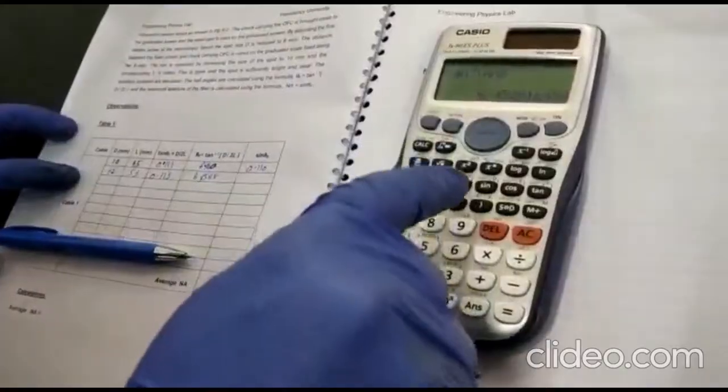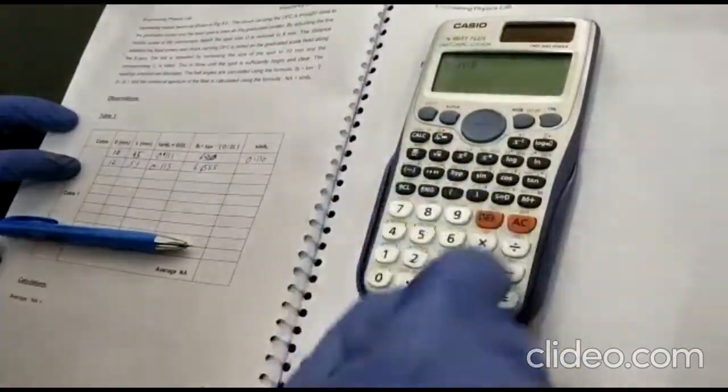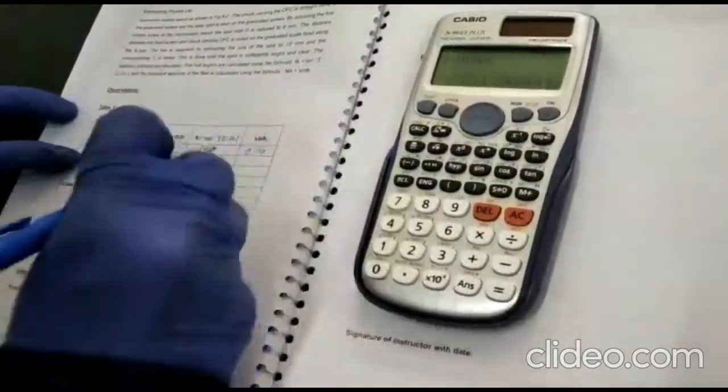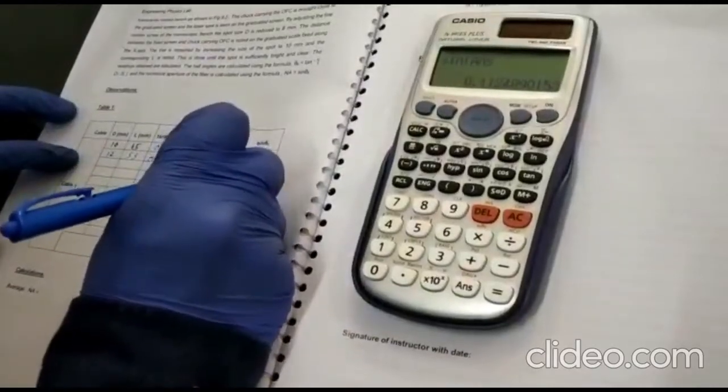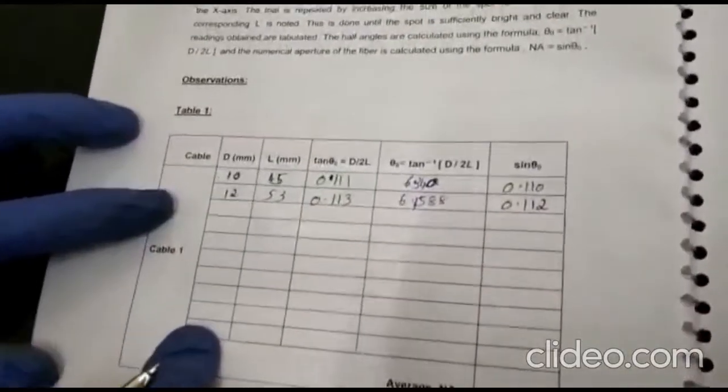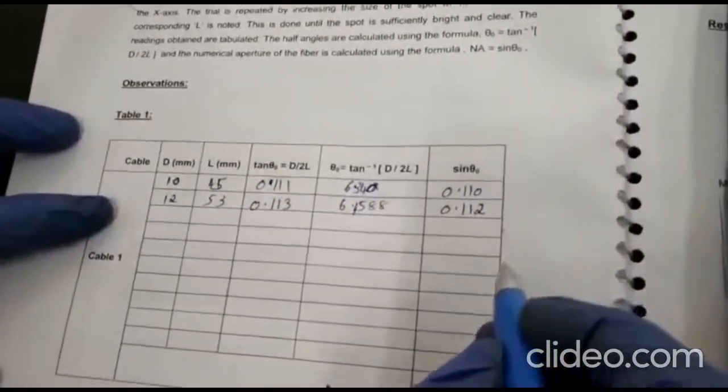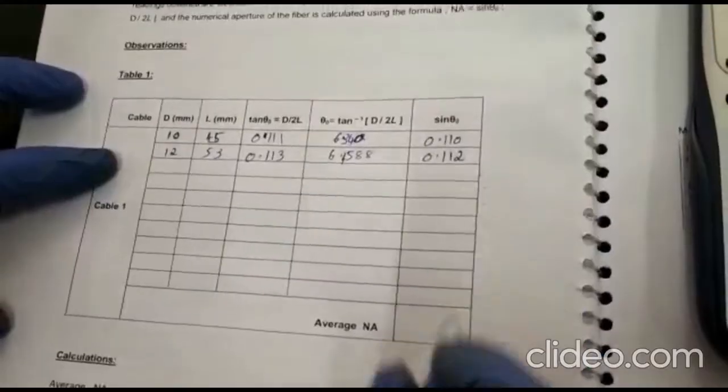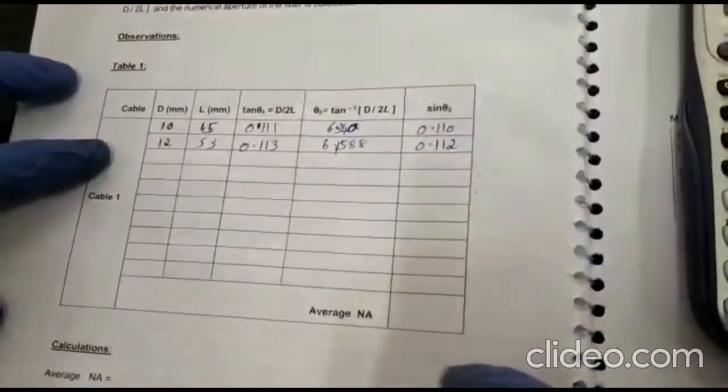Next you want to find the sin of this to find numerical aperture. So sin of the answer equals 0.112. So like that you need to take many different readings. So you will do here, here, here, here. Many, 5 readings you will take.